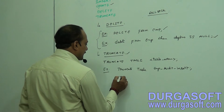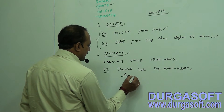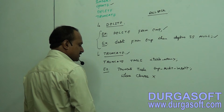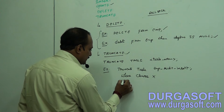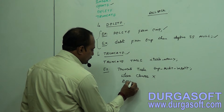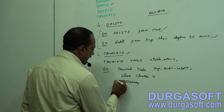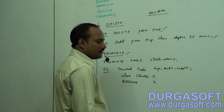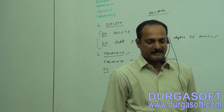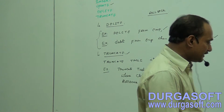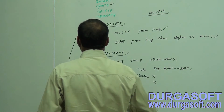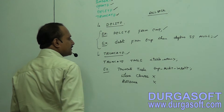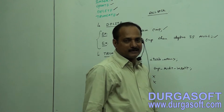TRUNCATE cannot accept a WHERE clause — you cannot apply WHERE conditions with TRUNCATE. Also, ROLLBACK cannot be applied once you have applied a TRUNCATE operation. Remember this. This covers INSERT, UPDATE, DELETE, and TRUNCATE — these are the DML commands.